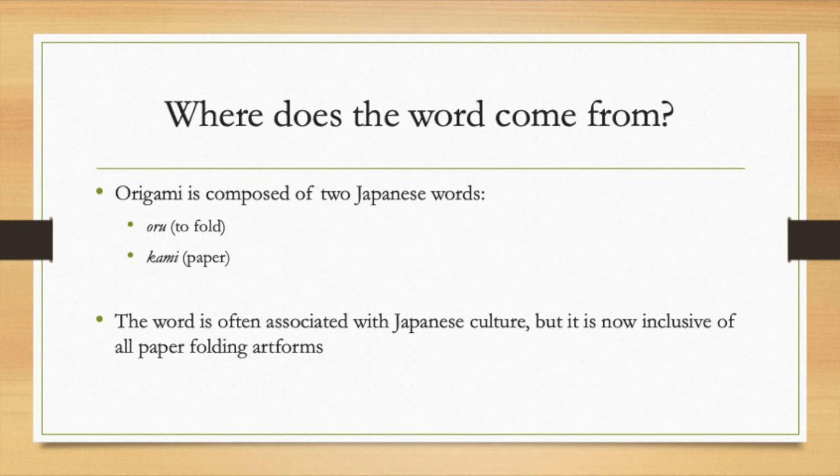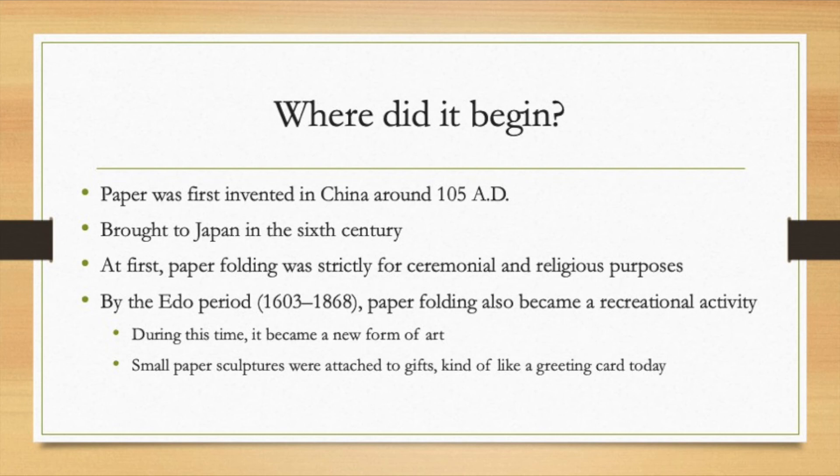So what about the word origami? Where does this come from? It is composed of the Japanese word oru, which means to fold, and the word kami, which means paper. It's been practiced in Europe and in China and Japan and they were mostly separate traditions until about a hundred years ago.